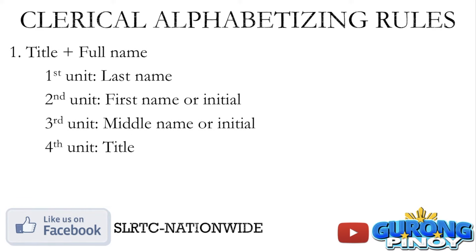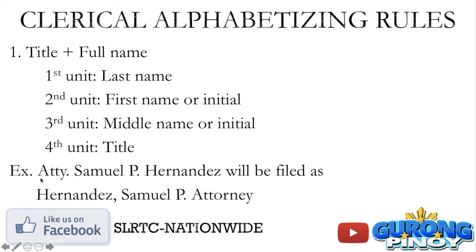First, clerical alphabetizing rules. If you are given the title plus the full name — pag binigyan kayo ng title plus full name ng isang tao — when you alphabetize it, what you write first would be the last name, followed by the first name or the initial, followed by the middle name or the middle initial, followed by the title. For example, if you have Attorney Samuel P. Hernandez, this is going to be filed as Hernandez, Samuel P., Attorney.